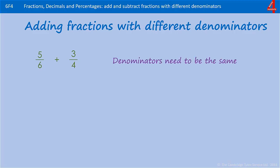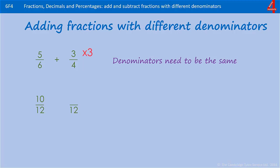As with ordering fractions, we have to make the denominators the same before we can start adding them, so we need to look for a common denominator. Both six and four will go into twelve — twelve is the lowest common multiple of six and four. To get from six to twelve we multiplied by two, so we do the same with the numerator. To get from four to twelve we multiplied by three, so we do the same with the numerator. Now we have ten twelfths add nine twelfths.